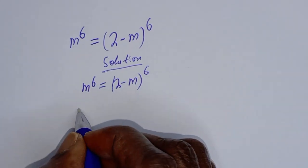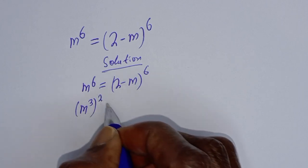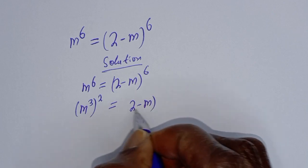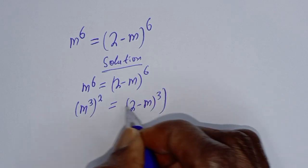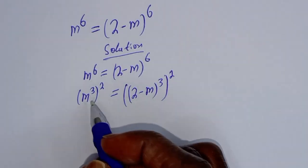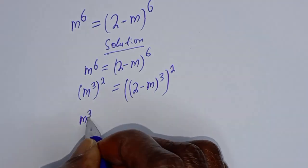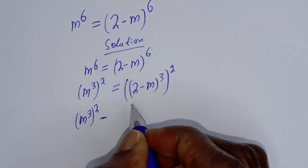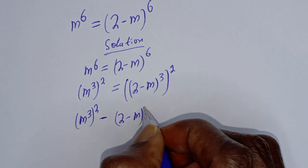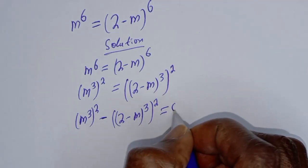m raised to power 6 can be written as m raised to power 3, all squared, is equal to 2 minus m raised to power 3, all squared. Let's take this to the other side: m raised to power 3 squared minus 2 minus m raised to power 3 all squared is equal to 0.